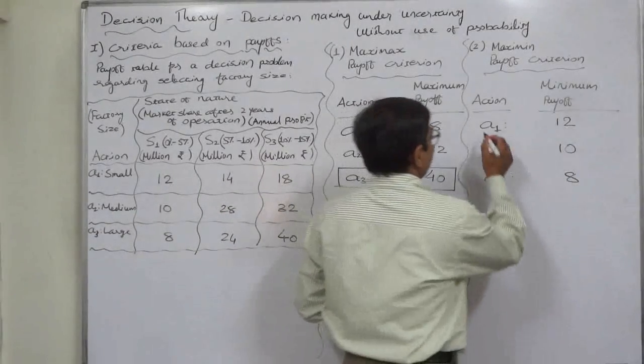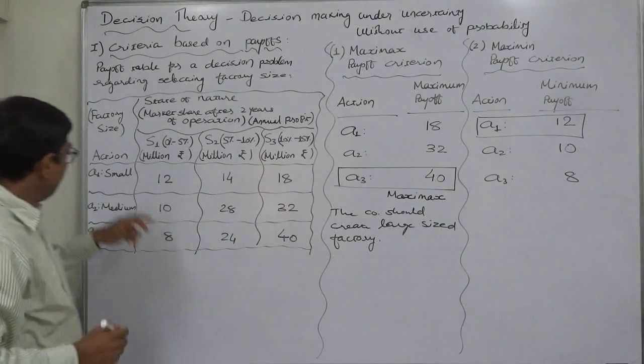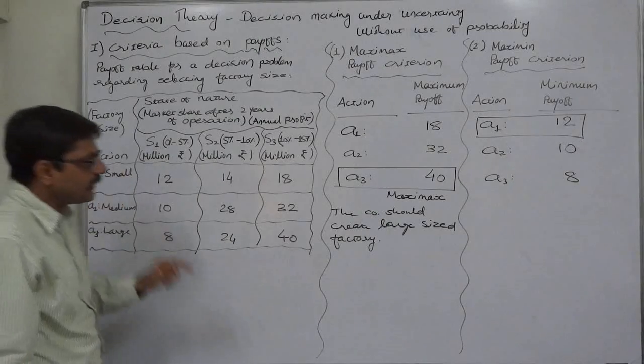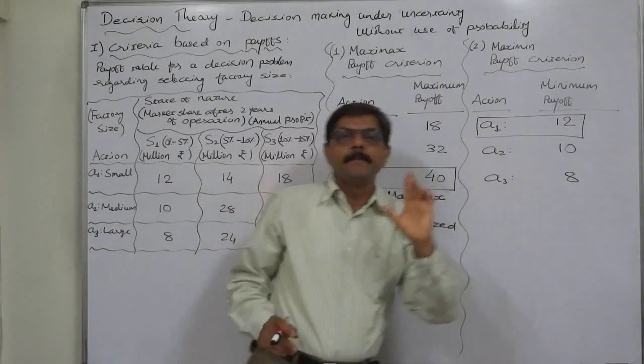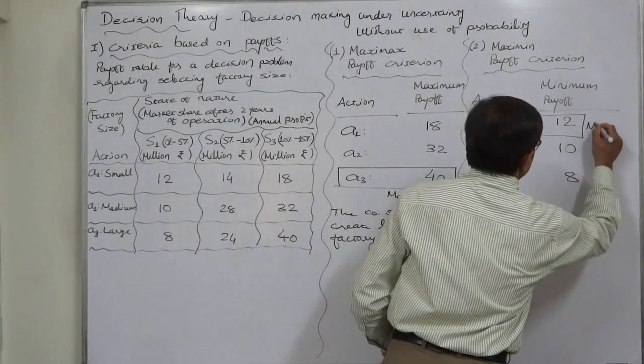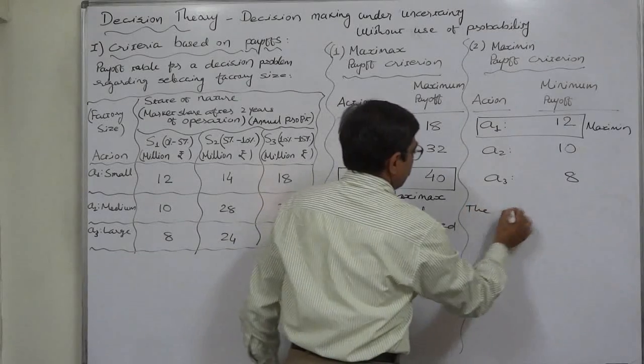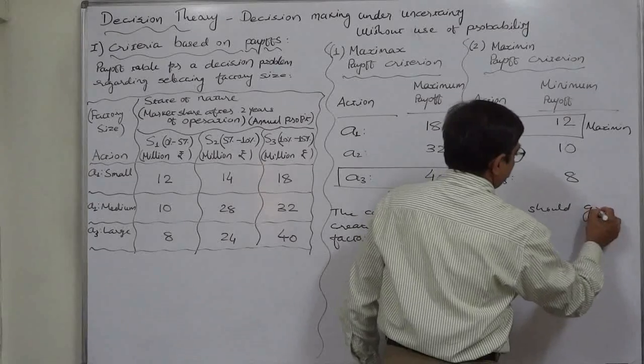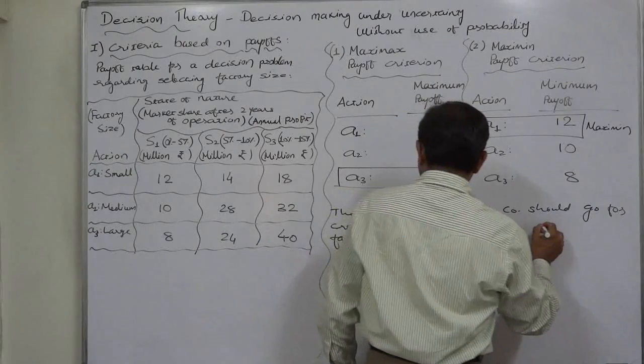Maximum is 12, that is in case of A1, and A1 means to create small size of factory. That means if the decision maker uses the maximin payoff criterion, then the conclusion will be the company should go for starting a small sized factory at the new location.